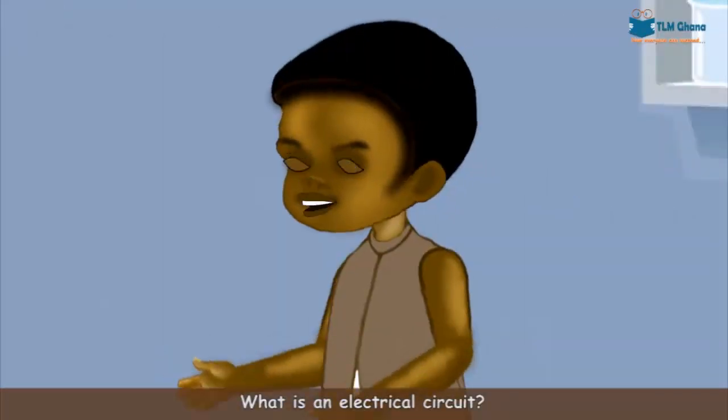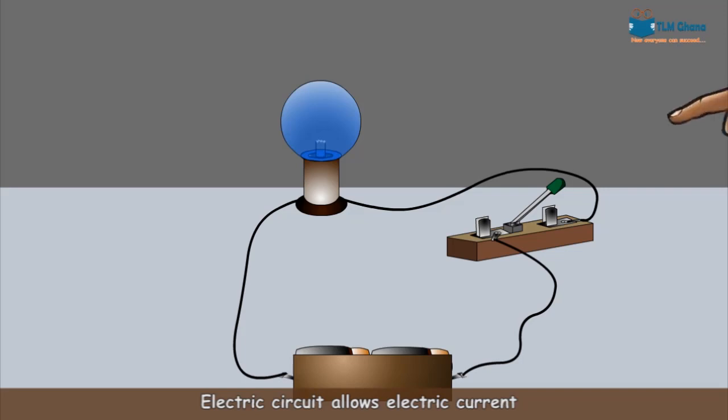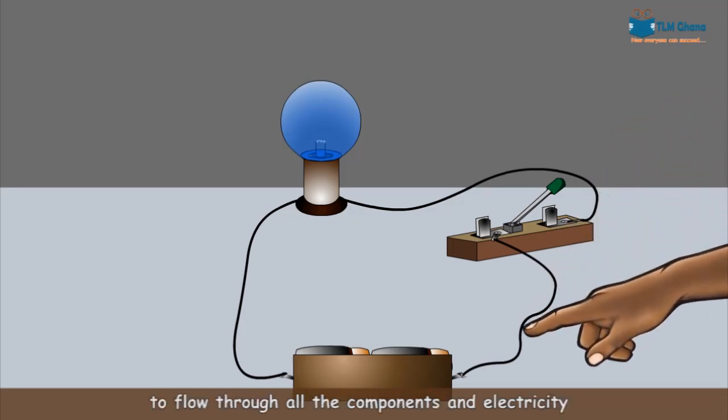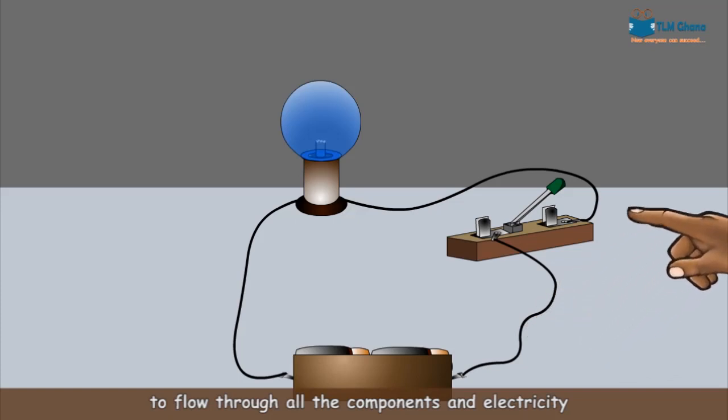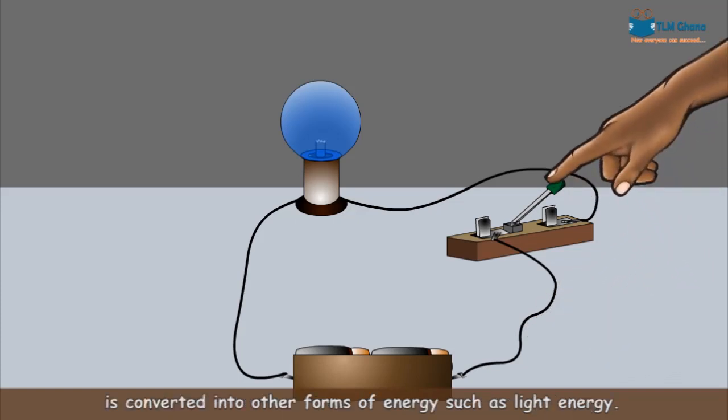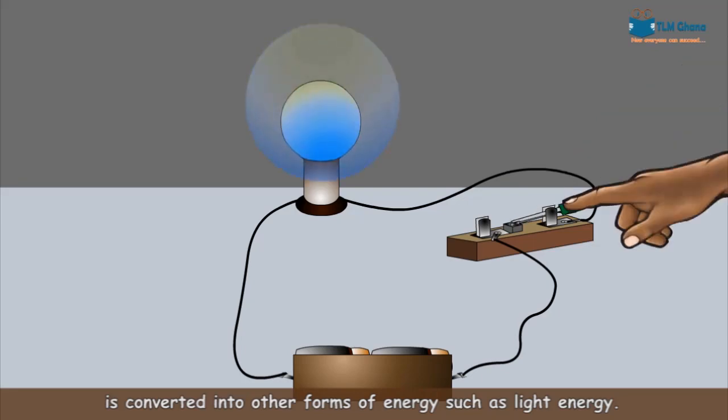What is an electrical circuit? An electric circuit allows electric current to flow through all the components and electricity is converted into other forms of energy, such as light energy.